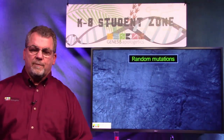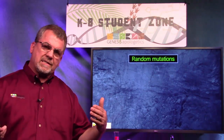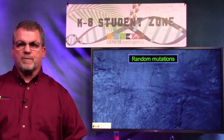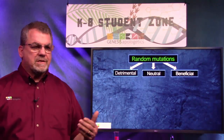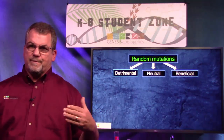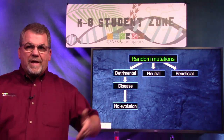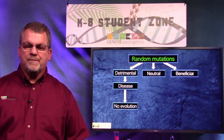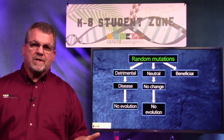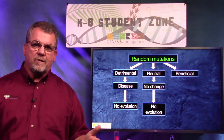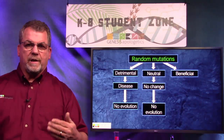So what is a mutation? A mutation is when a living creature reproduces and there are mistakes in the genetic information passed on to the offspring. Theoretically, there are three different types of mutations. The first is detrimental — meaning bad things. We know of thousands of mutations that cause disease or death. That's not going to help Darwinian evolution. The next type is neutral — they don't really do much. Some examples might be an unusual eye color or hair color. Again, that's not going to help promote Darwinian evolution.